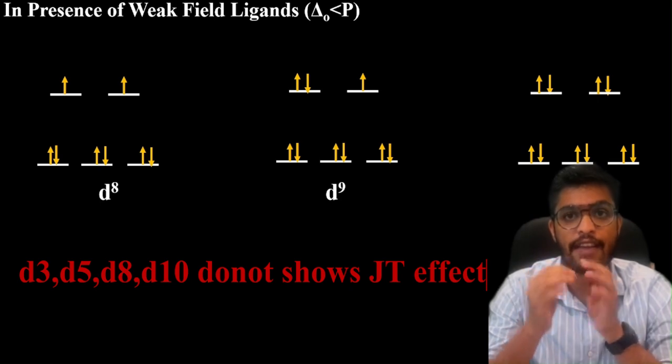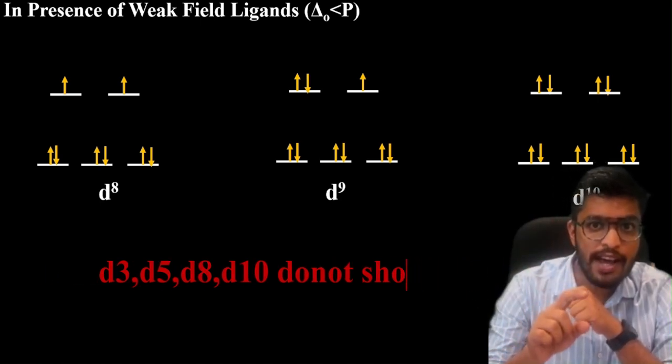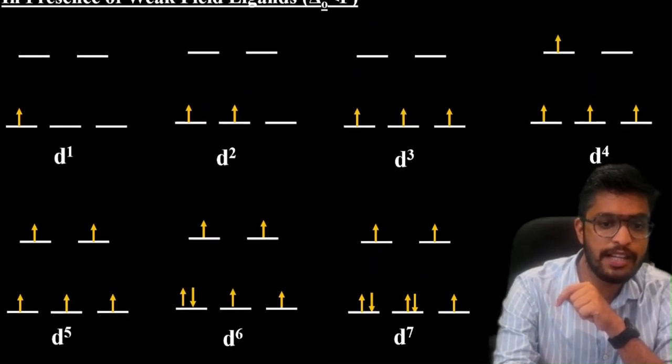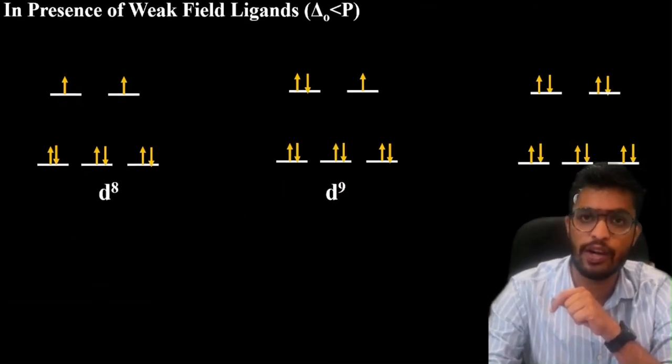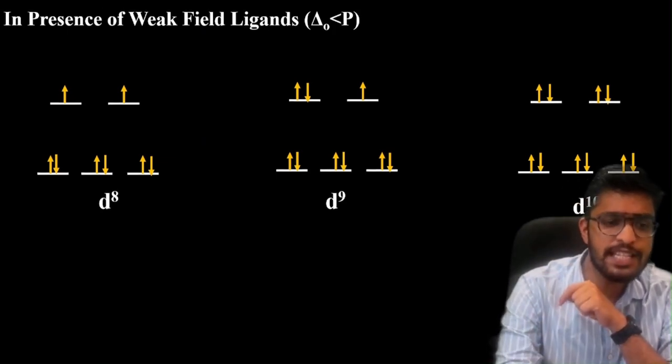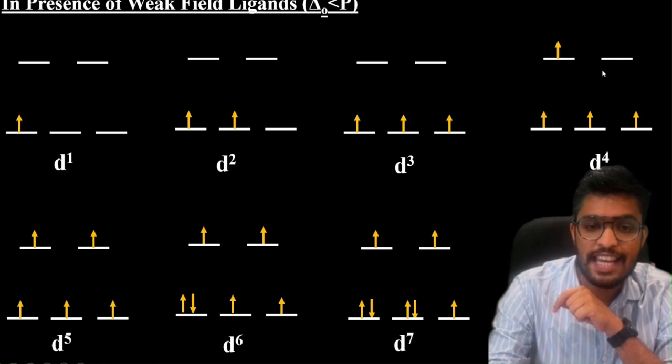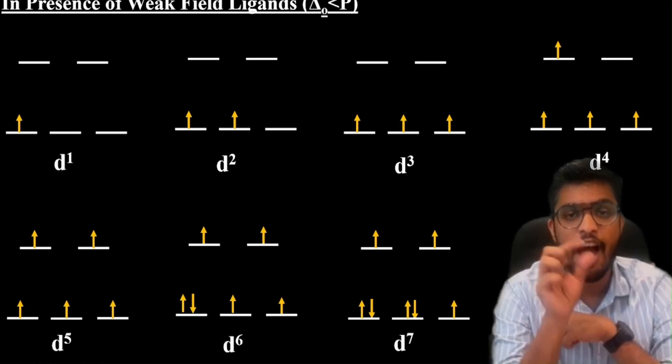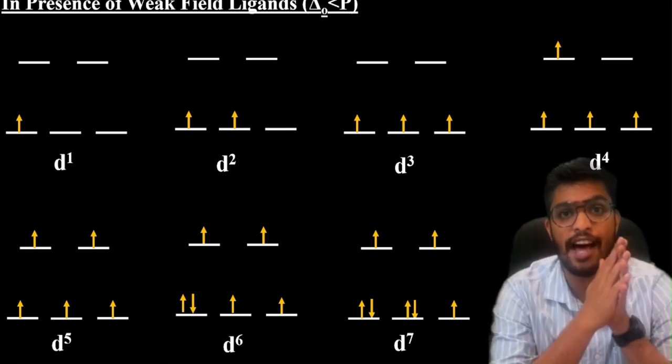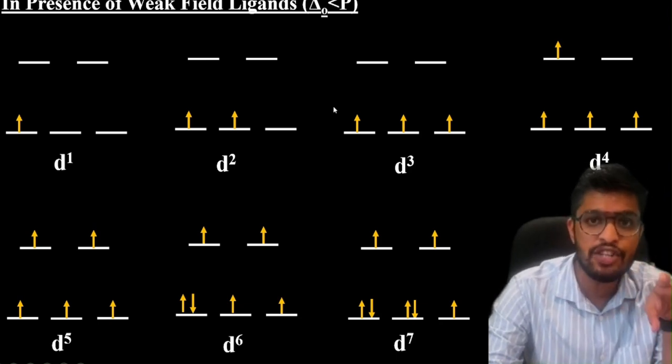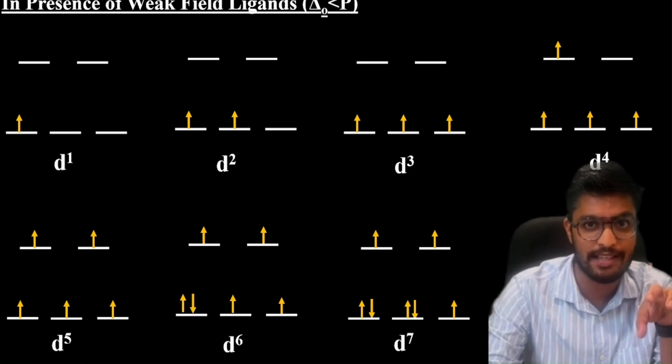D4 and d9 configurations show asymmetrical arrangement of EG orbitals. In these cases you can see a strong Jahn-Teller effect compared to d1 and d2, which show asymmetric arrangement of T2G orbitals.